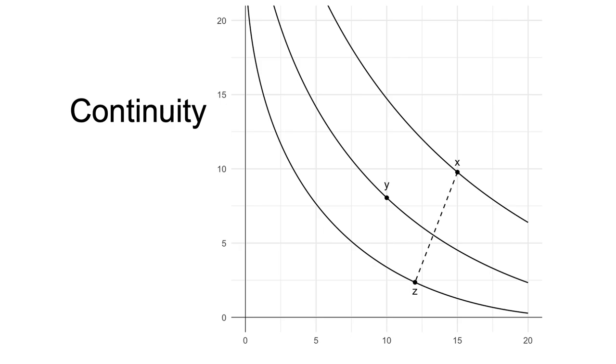That is, x is preferred to y, and y preferred to z. Now consider a gamble that pays x with probability p and z with probability 1 minus p. Each value of p would result in a gamble with utility falling between that of x and z. If we were to draw a line between x and z, you could think of the utility of the gamble for each value of p as having the same utility as a bundle on that line.